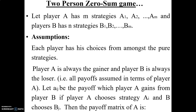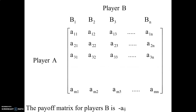Some assumptions in the theory of games: each player has choices from among pure strategies; player A is always the gainer and player B is always the loser — all payoffs are expressed in terms of player A. Let a_ij be the payoff that player A gains from player B when player A chooses strategy a_i and B chooses b_j. The payoff matrix of A is structured accordingly.